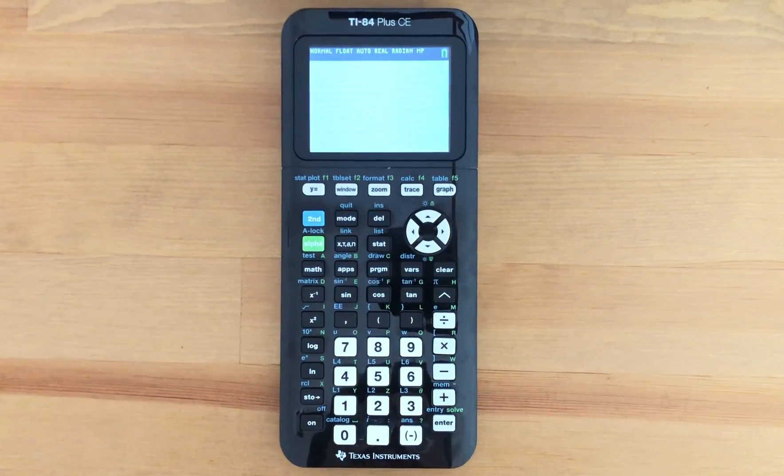So there you have it, that's how you turn up as well as turn down the brightness on a TI-84 CE graphing calculator. Thanks for watching everyone.